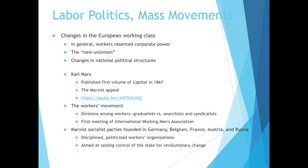There were also changes in the European working class. Most factory workers resented corporate power — they felt they were working their hardest for the same wage while factory owners grew richer and richer. This gave rise to something called the new unionism, and changes in the national political structure followed. Around this time we start hearing from Karl Marx, who published the first volume of Das Kapital in 1867. We're going to watch a short YouTube video telling us a little about Karl Marx and socialism.